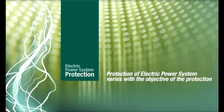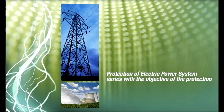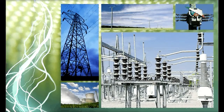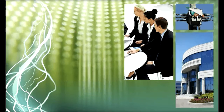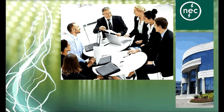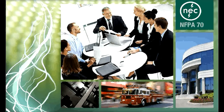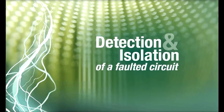Protection of the electric power system varies with the objective of the protection. Where the electric power system is under the supervision and control of the electric utility, system protection strives to limit damage to the installed system yet provide minimum service interruption. Where the system is on the user's side of the service connection, the NEC (NFPA 70) requires protection against fire hazards and electric shock. In each case, the common theme is detection and isolation of a faulted circuit.